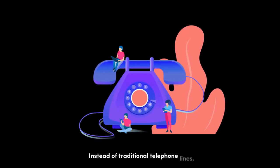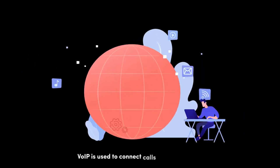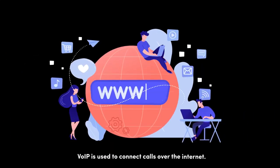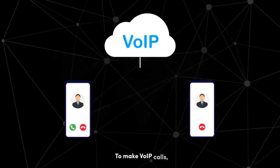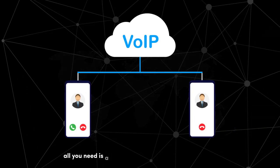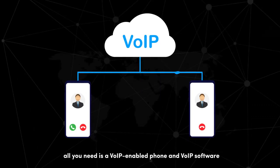VoIP — Voice over Internet Protocol. Instead of traditional telephone lines, VoIP is used to connect calls over the internet. To make VoIP calls, all you need is a VoIP-enabled phone and a VoIP software.